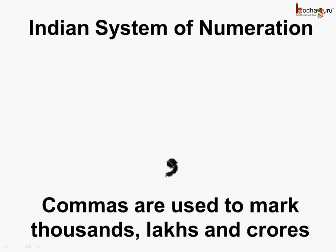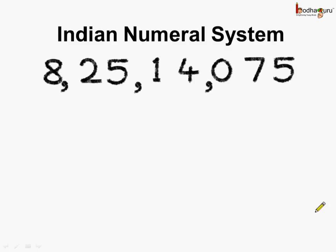Now, what about the Indian system of numeration? Here, commas are used to mark thousands, lakhs, and crores. Let us see how. In this number, we have commas placed according to the periods in the Indian numeral system.